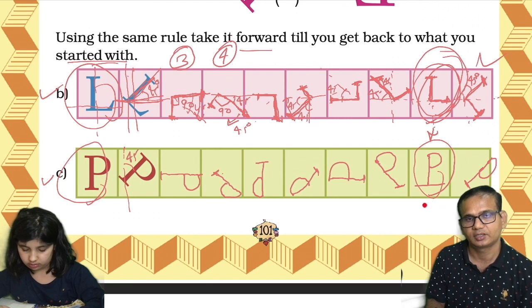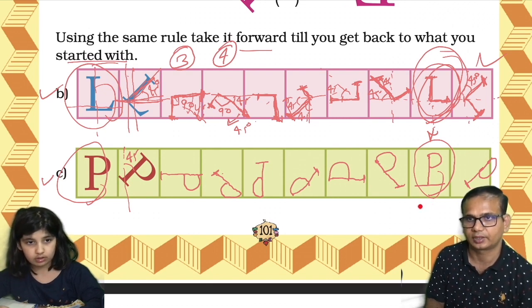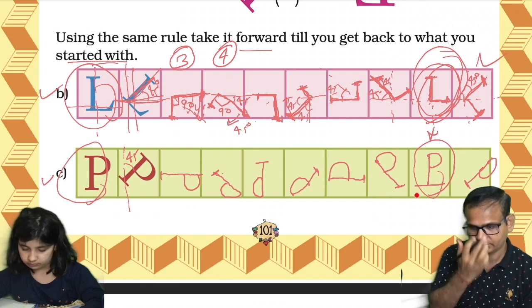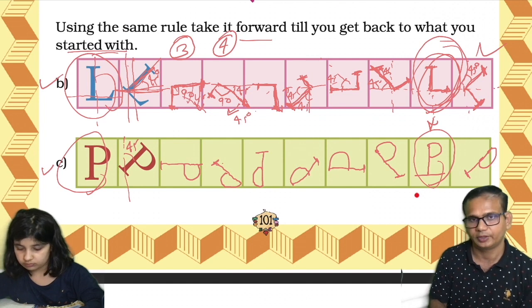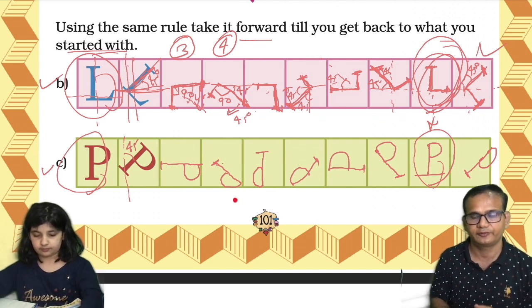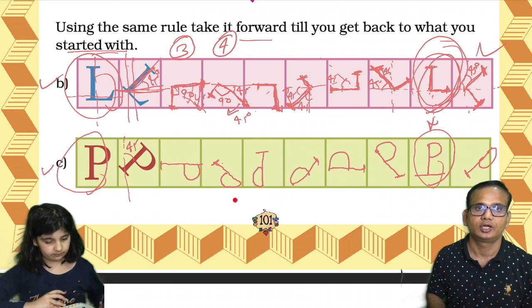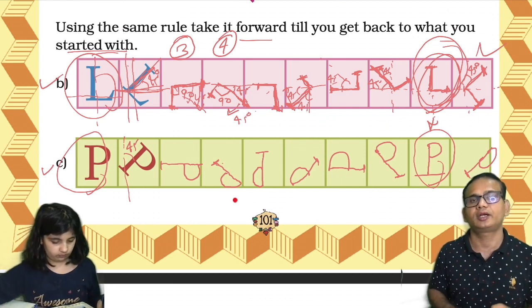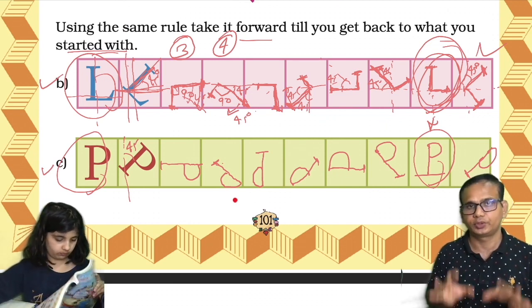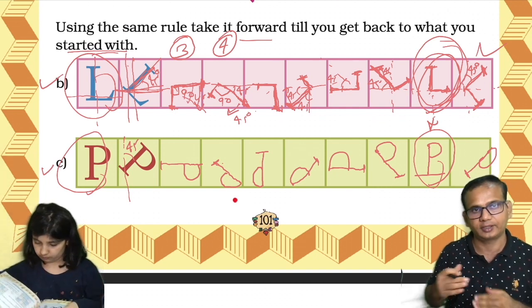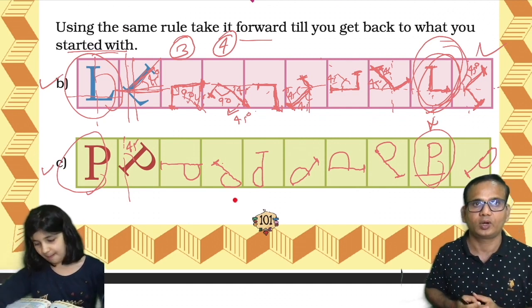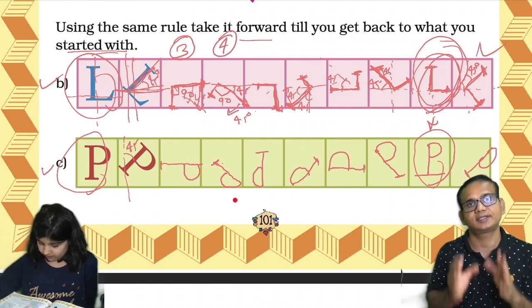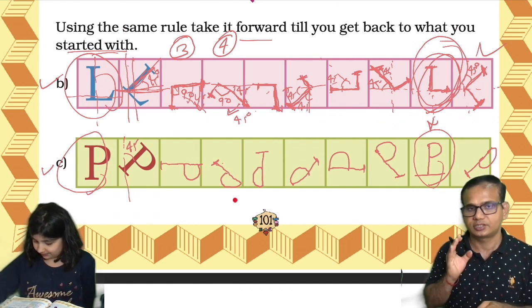Avisha is verifying her own pattern to check if it matches mine. Let's see how long she takes. Avisha has verified — hers is correct. We have now completed page number 101. I hope you have understood the concept of 45-degree turns. We'll come back with page number 102. If you like this video, don't forget to like, share, and subscribe to this channel. See you in the next video.